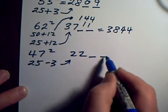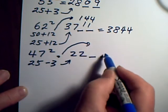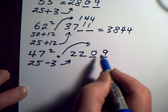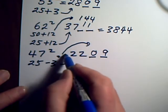And then I'm going to write the 3 squared in those two spots as 09 again, and there's my answer, 2209.